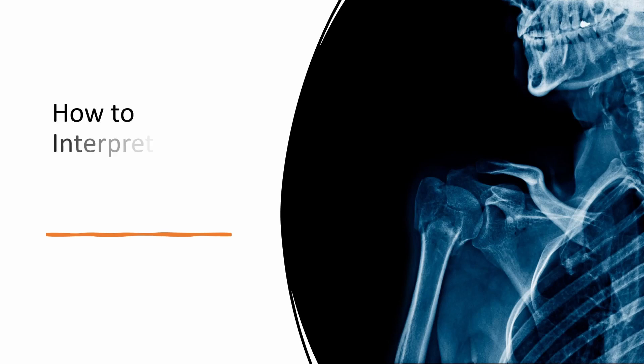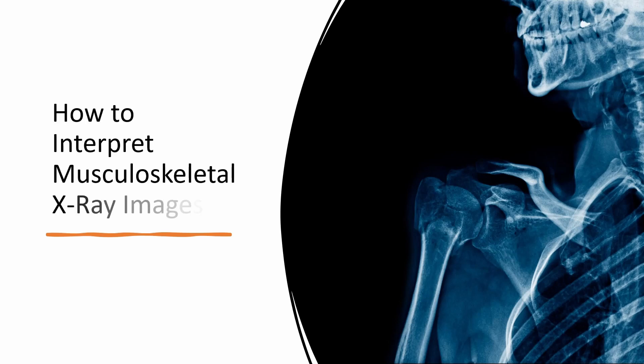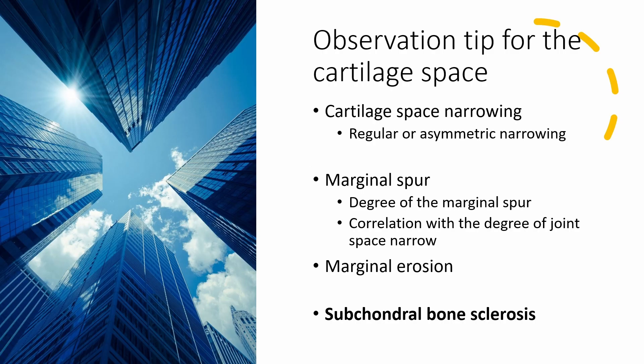Hello, and welcome again to all our practical and master class participants. We are now on part 8 of our tutorial series, focusing on the basic interpretation of musculoskeletal and spinal pain radiographs. Today, we will extend our discussion on the category of cartilage space.